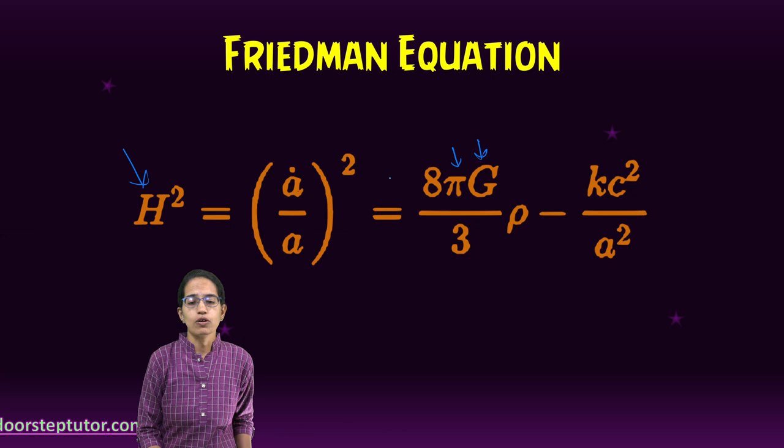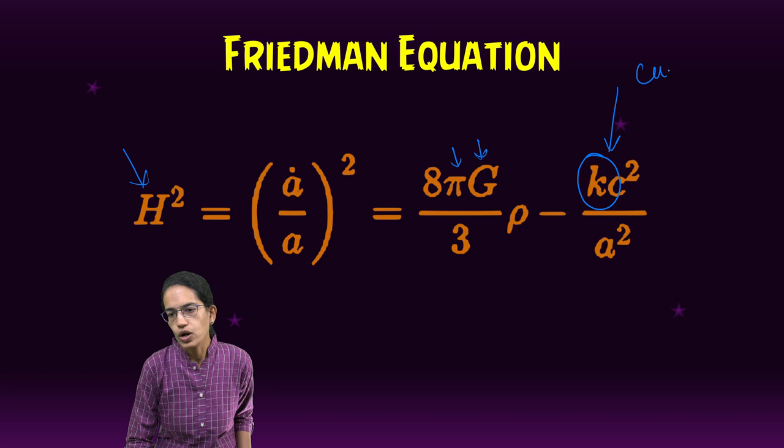H is the Hubble constant, Hubble parameter, but the most important here is the K, which is called as the curvature parameter.